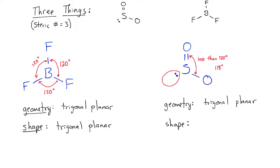Sulfur dioxide has the same geometry as every other molecule with a steric number of three: trigonal planar. But SO2 only has two atoms around the central atom, so when we talk about its shape, we say it is bent rather than trigonal planar. When considering shape, we don't count electron pairs — we only look at bonded atoms. If you look at sulfur dioxide and ignore the electron pairs, it looks bent. In both BF3 and SO2, the geometry is trigonal planar, meaning these molecules exist in a planar, flat conformation.